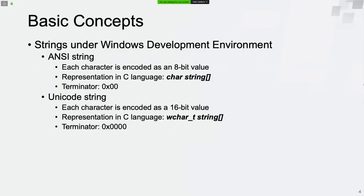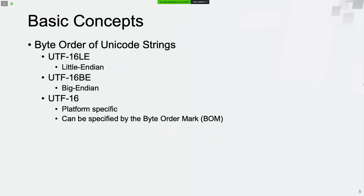For Unicode strings, each character is encoded as a 16-bit value. We can define a wchar_t type array in C language to store the string data. The string terminator is a 2-byte null character. The characters can be encoded in two forms: little endian and big endian.